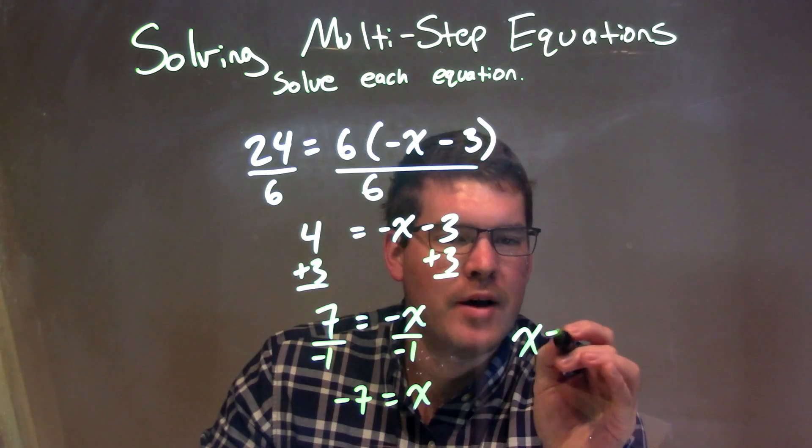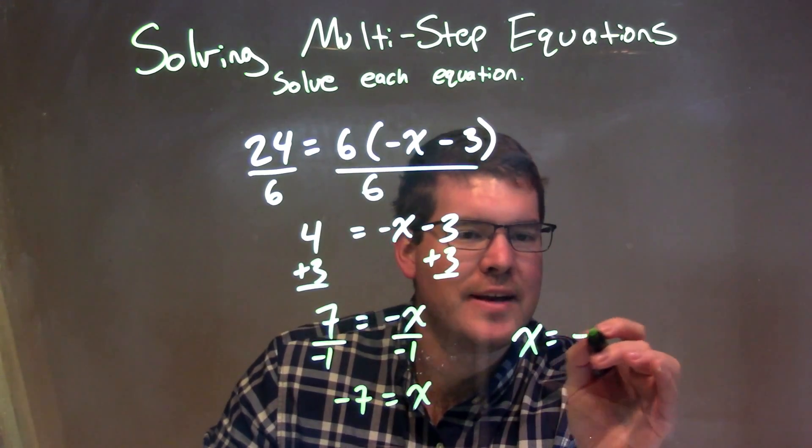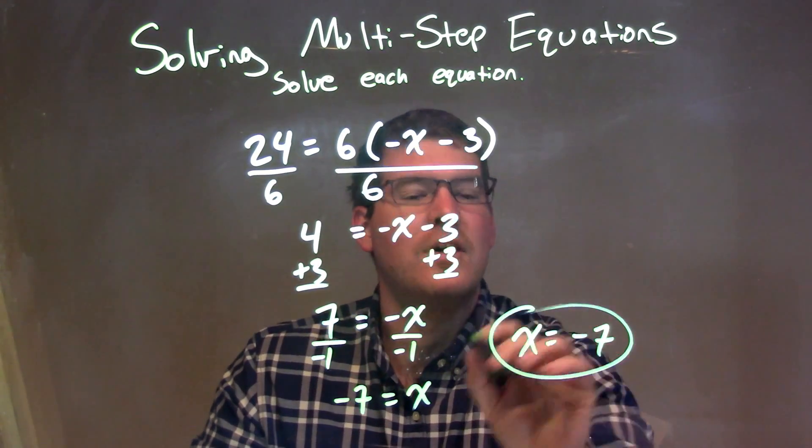So, x is already by itself. I can rewrite it with x first. x equals negative 7, and that is the final answer.